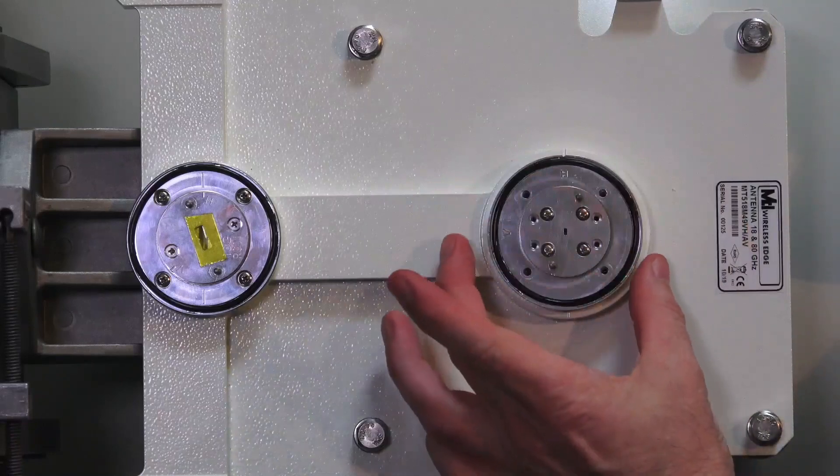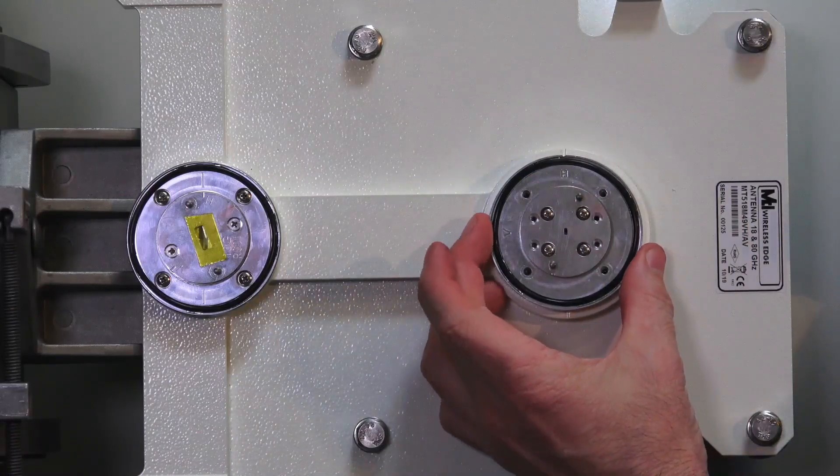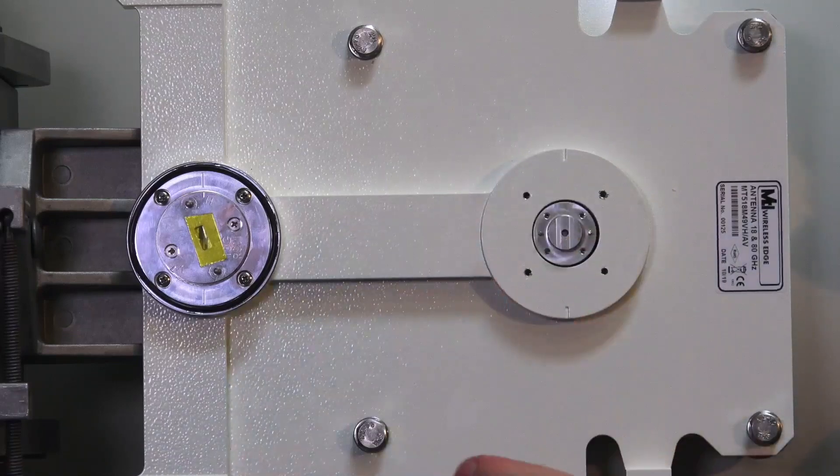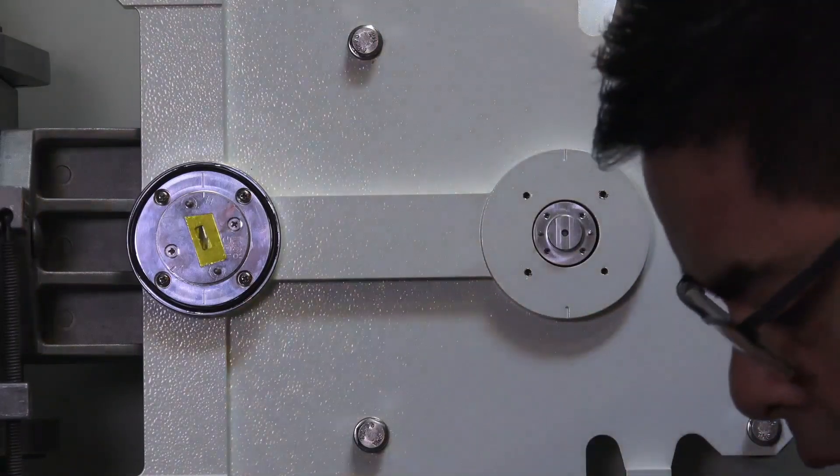Once those outer screws have been removed, this entire assembly will come out of the antenna. We're going to dump out those four screws and set those aside.